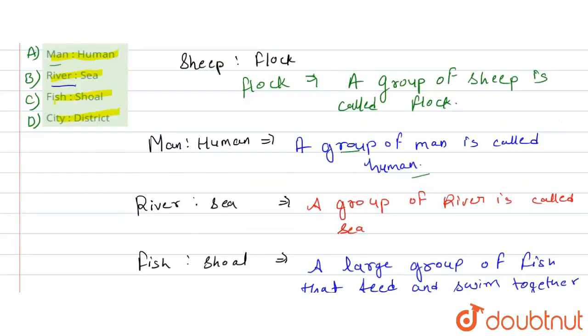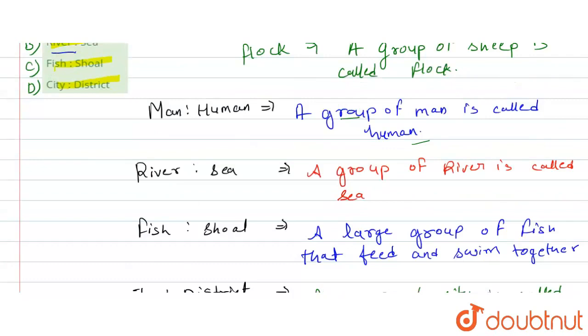According to the options, it is fish and shoal, because the fish group is not called the shoal.